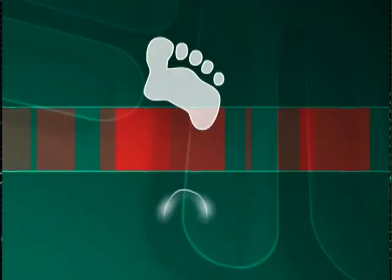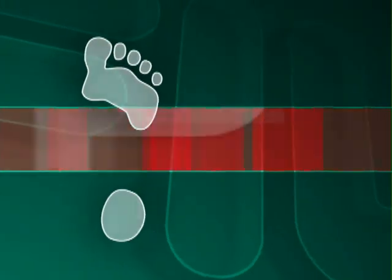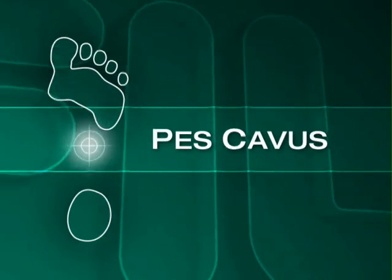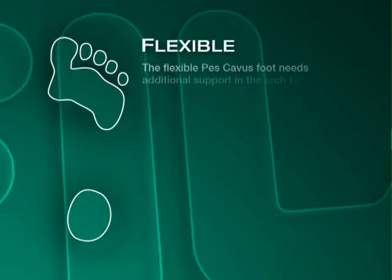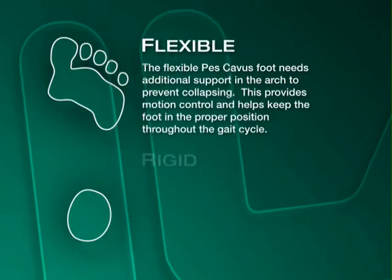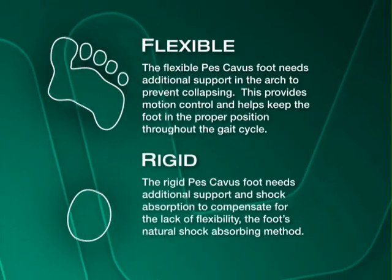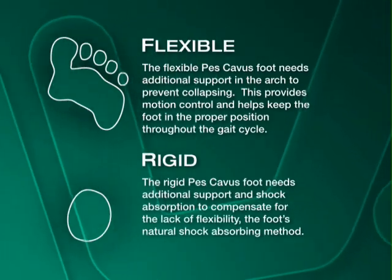The last grouping is pes cavus, or a high arch foot. In that, there are two subgroups: flexible cavus and rigid cavus.